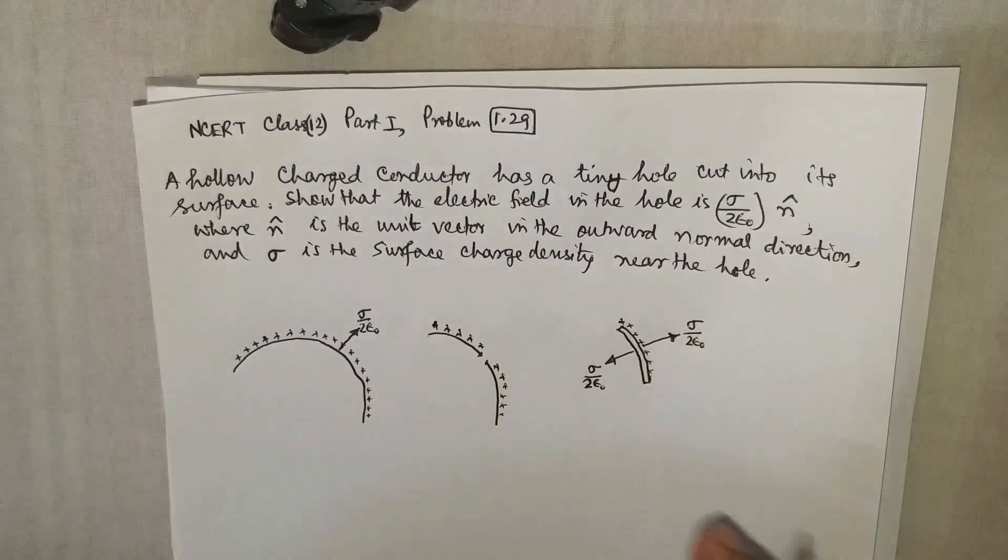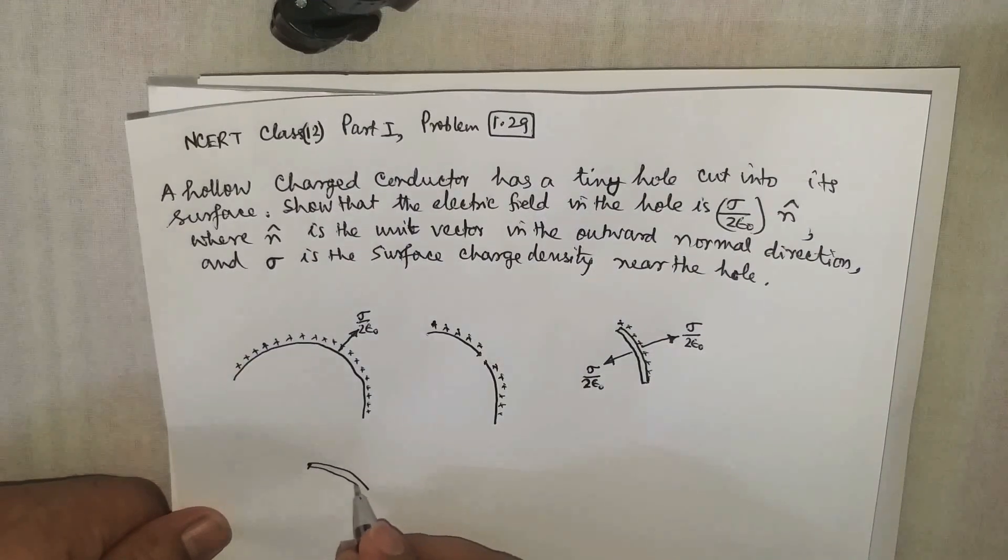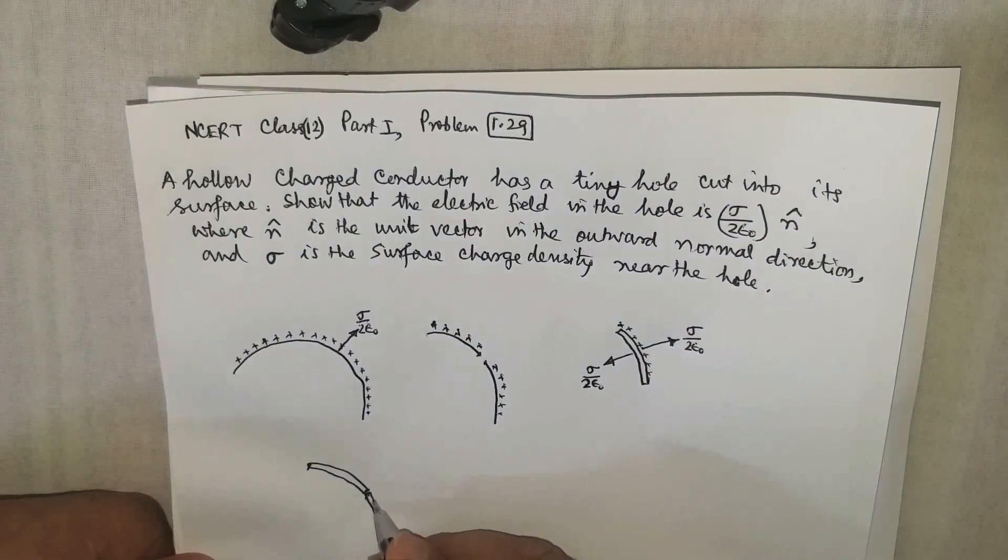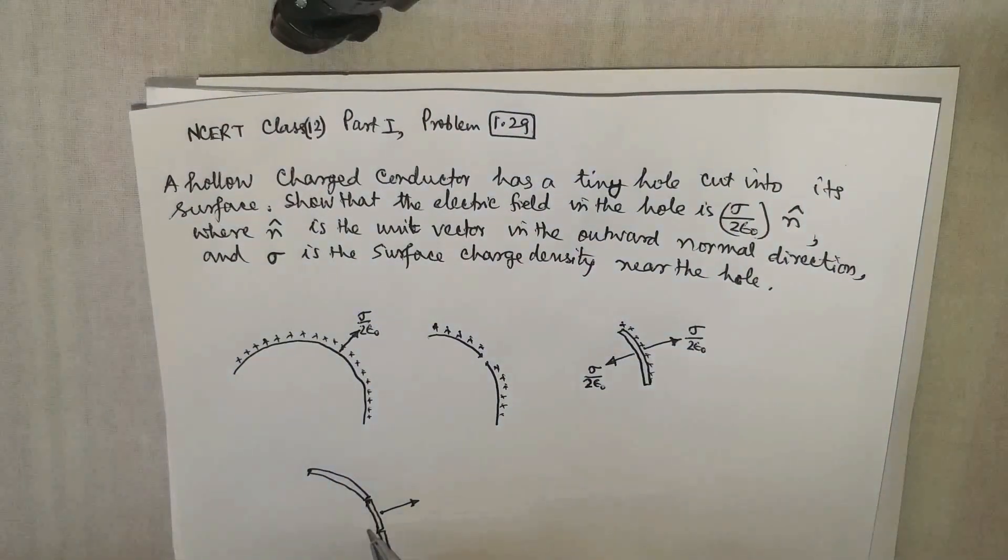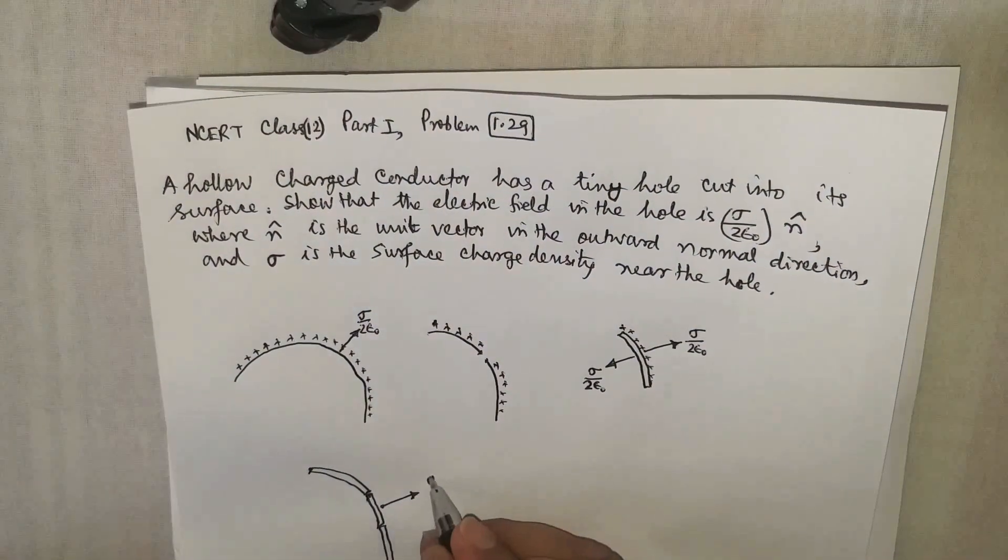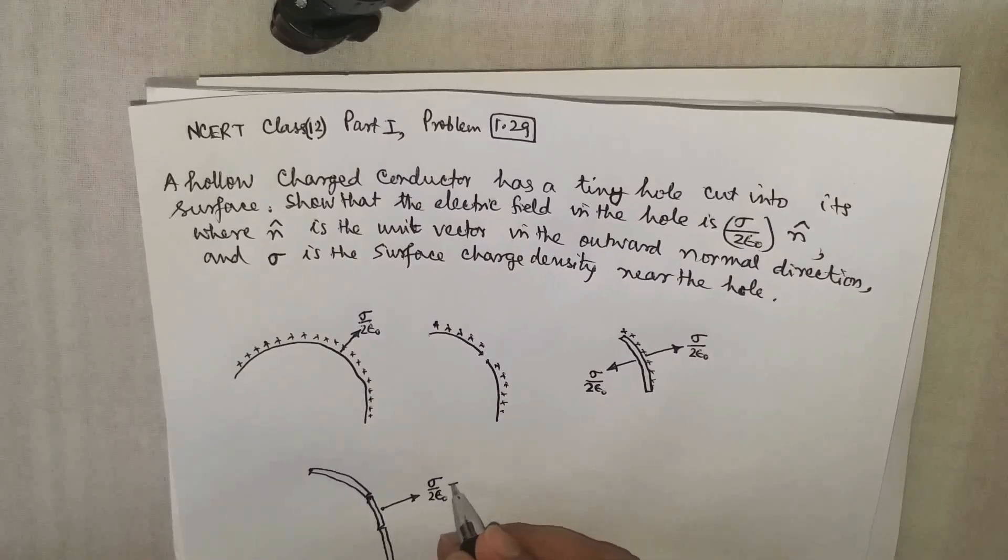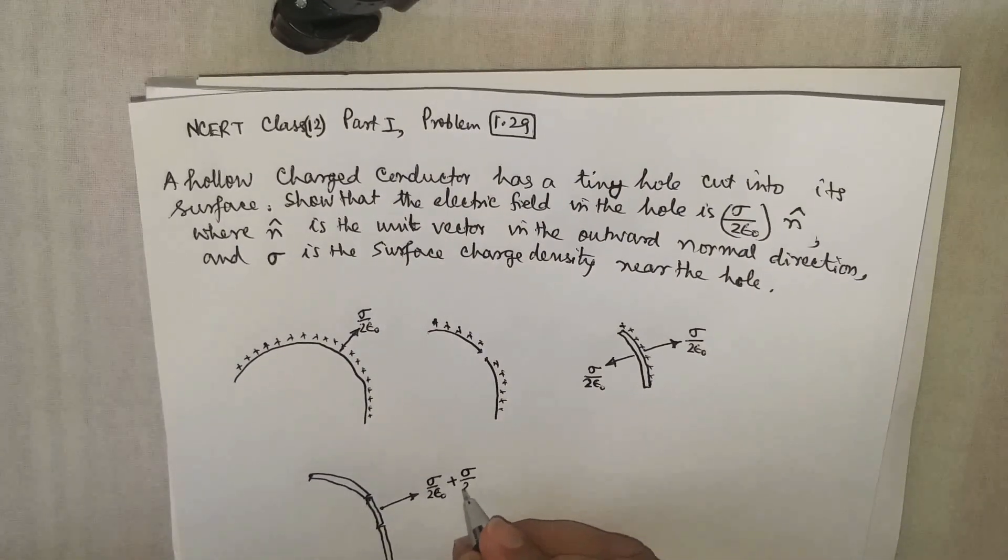When we replace this, let us enlarge it. This was the gap, and now we have again replaced that part. So exactly at this particular point, the contribution due to this part which is now getting replaced is sigma by 2 epsilon naught, and the contribution by the rest of the conductor will be again sigma by 2 epsilon naught.